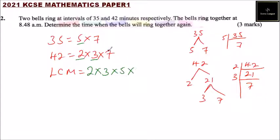And we have 7, so we take 7. If for example we have 2 times 2 and 2 in the first one, you take 2 times 2, the one with the highest index. When you multiply 2×3×5×7, you'll be able to get 210 minutes.